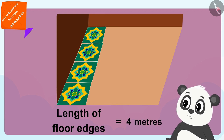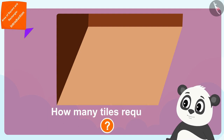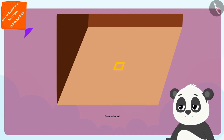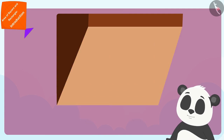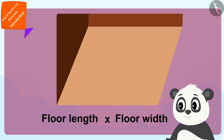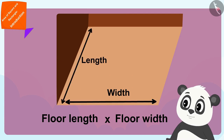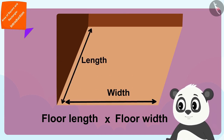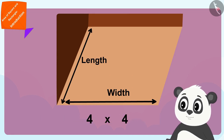In order to find the number of tiles required to cover Golu's square shaped floor, he only has to multiply the length of any two edges of his floor. In this way, Golu needs four times four, or sixteen tiles.